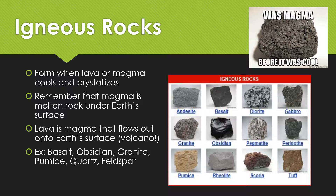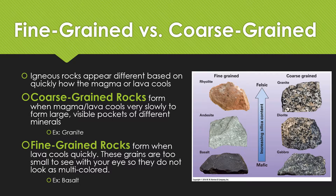Igneous rocks form when lava or magma cools and crystallizes. Magma is that molten rock, and when it comes out onto the earth's surface it's called lava, like from a volcano. Examples of igneous rocks are basalt, obsidian, granite — which you may have on your countertops at home — pumice, quartz, which is another very common countertop material, and feldspar.